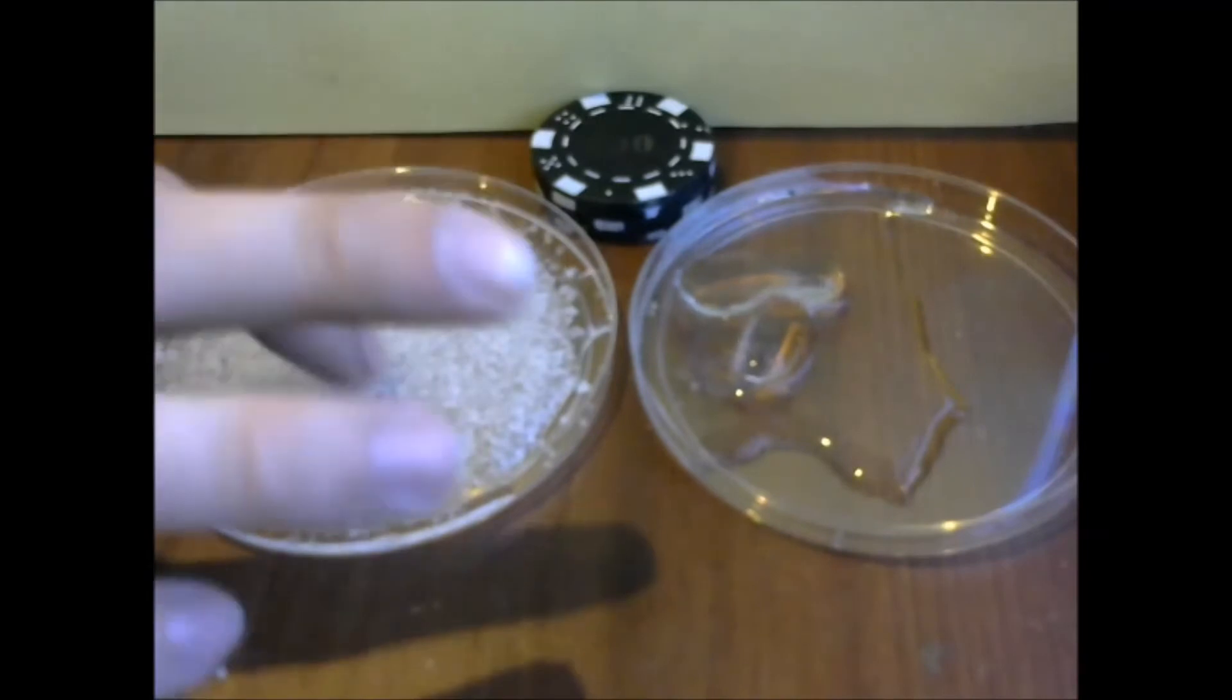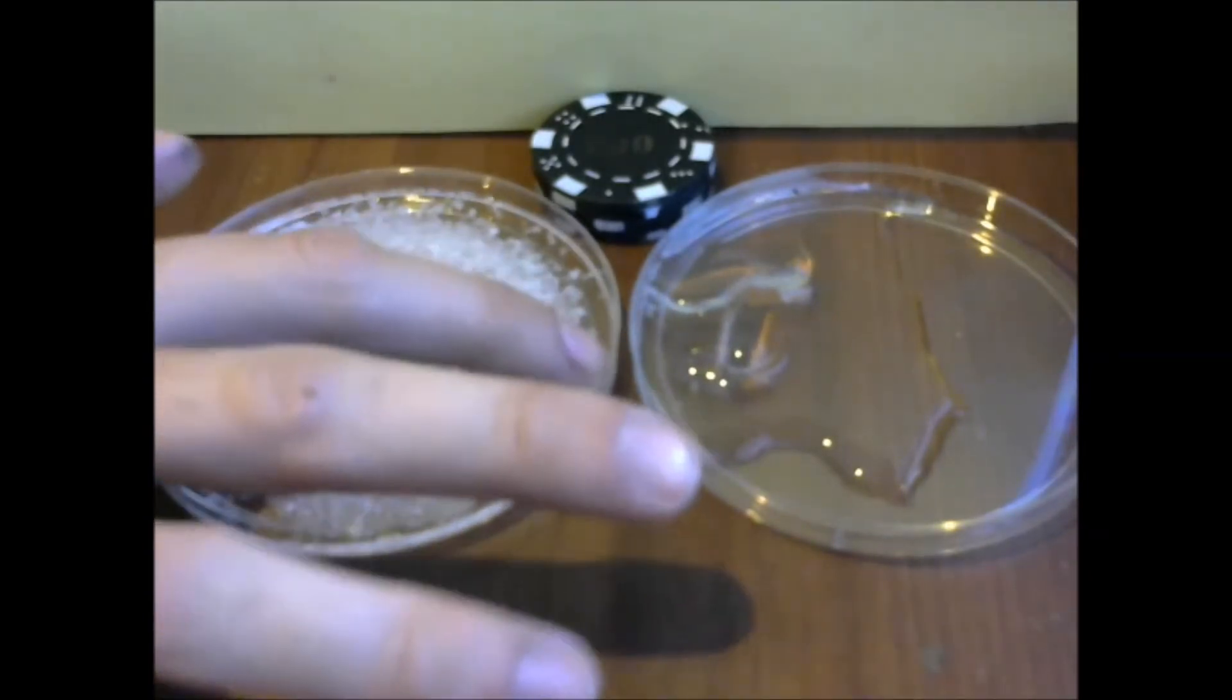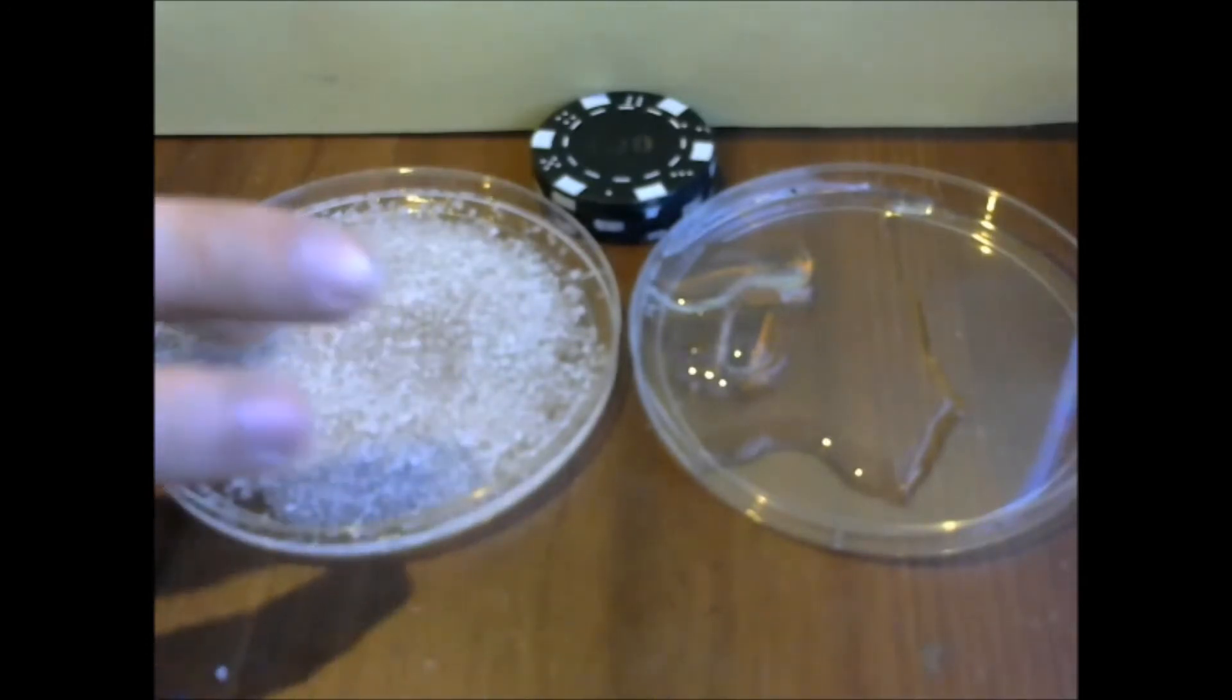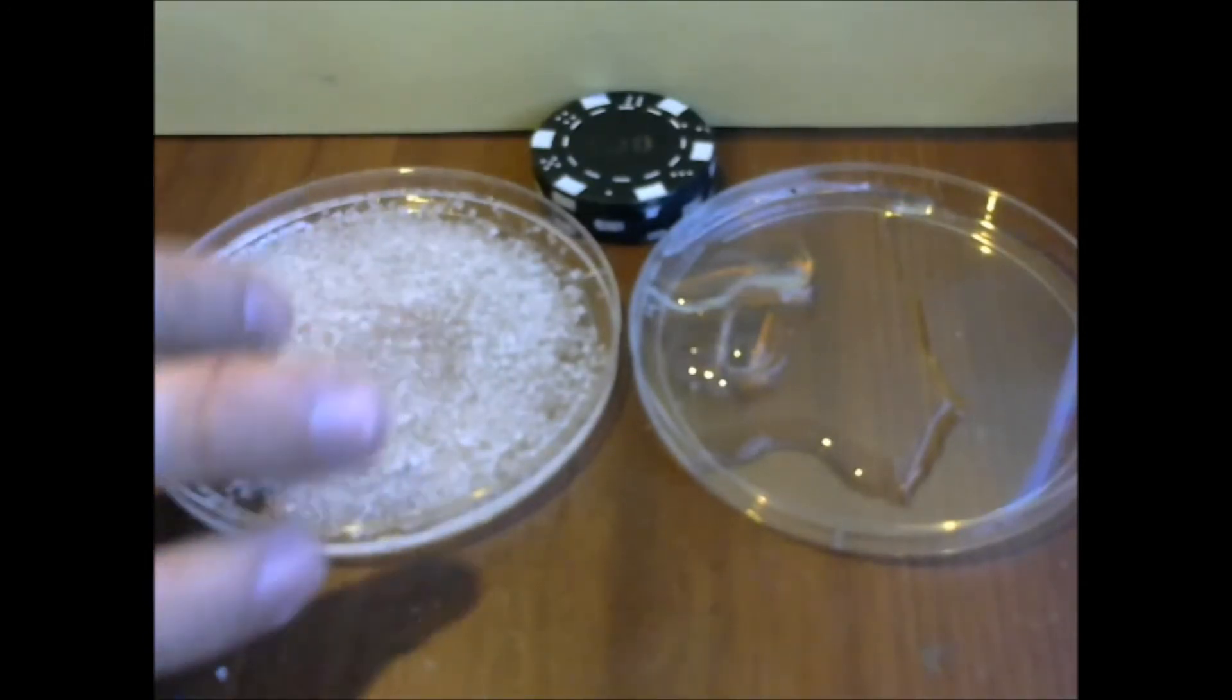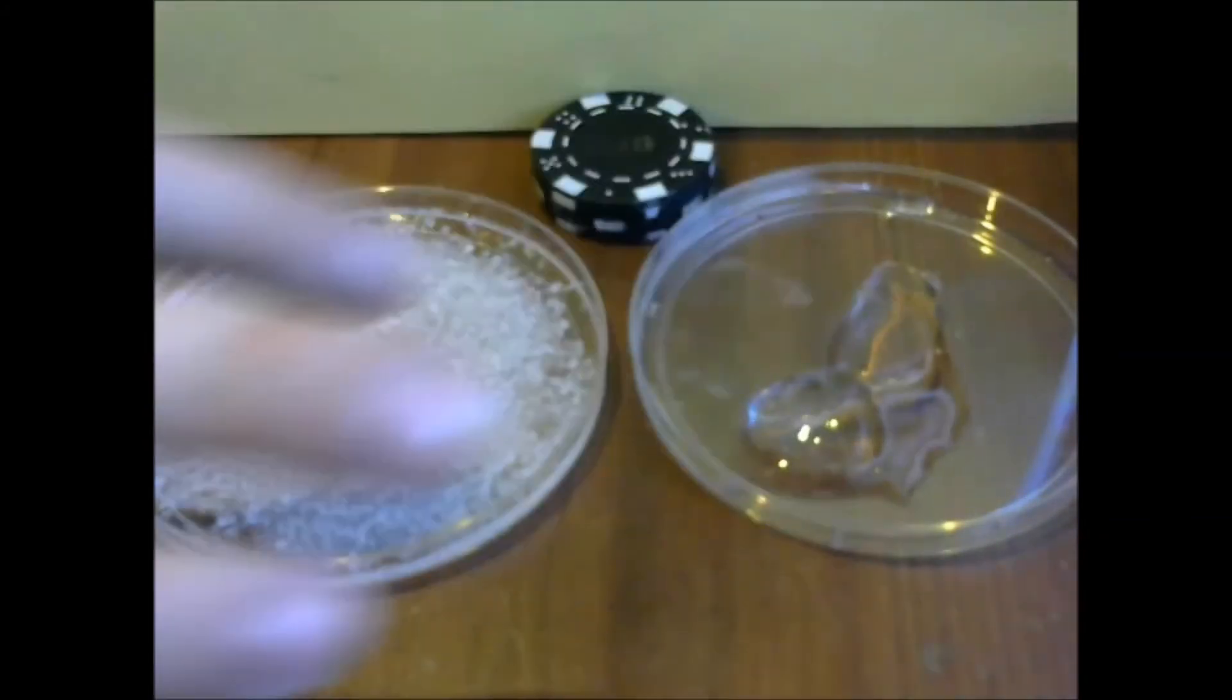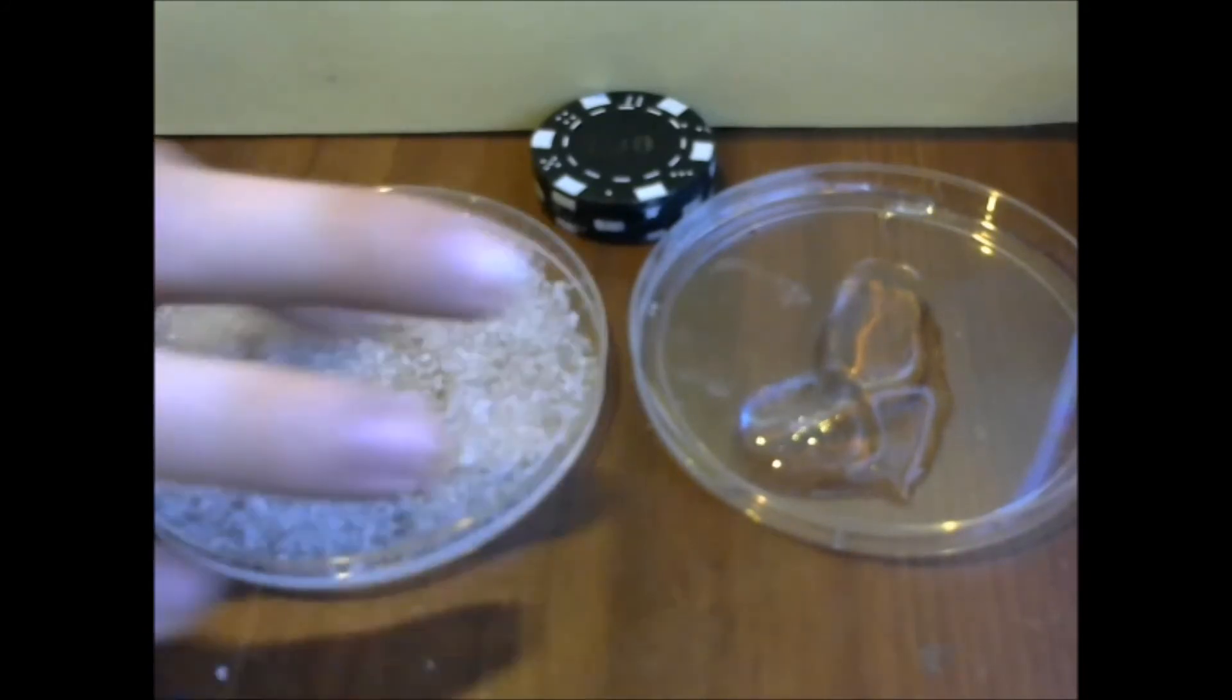The salt lowers the freezing temperature of the ice. So, if the ice's temperature is higher than the freezing temperature because of the salt, it'll melt and then not refreeze. So we still have solid cubes here and complete water-salt mixture over here.